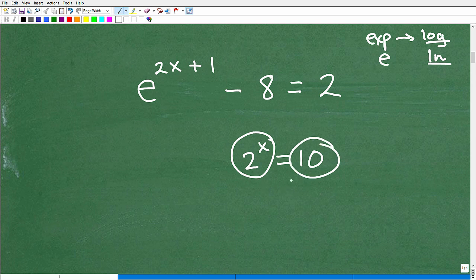you need to isolate the power on one side of the equation, and then you want to simplify it by putting all the numbers, everything else, on the other side.